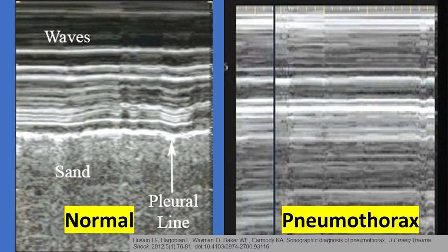This is a classic seashore sign. The lung moves, creating a granular pattern representing the sand, while the layers of pleura and subcutaneous tissue planes represent non-moving areas and therefore appear as waves. Lack of the seashore sign and persistent waves would be a sign of a pneumothorax, such as on the right side of the screen. This is called a stratosphere sign, or may be described as having a barcode appearance.